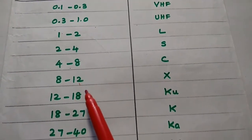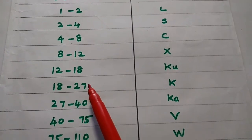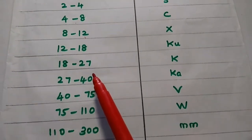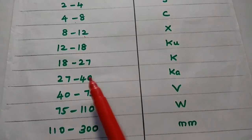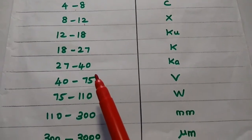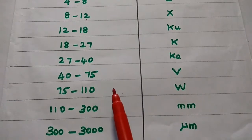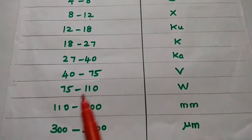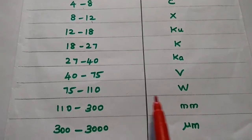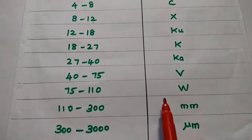4 to 8 gigahertz as C band. 8 to 12 as X band. 12 to 18 as KU band. 18 to 27 as K band. 27 to 40 gigahertz is Ka band. 40 to 75 as V band. 75 to 110 gigahertz is W band. 110 to 300 as MM band, that means millimeter waves, because its wavelength is in the range of millimeters.